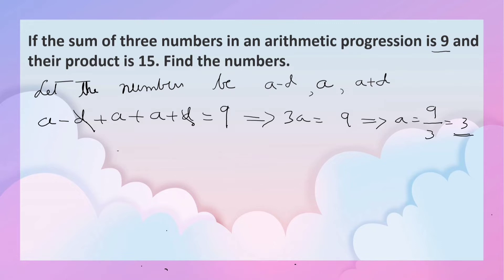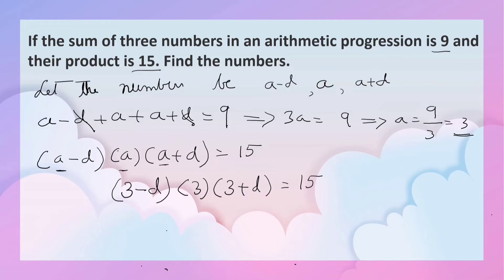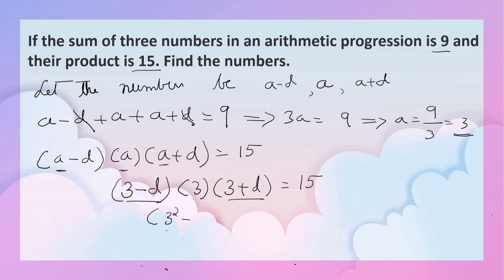Now we know that the product of the numbers is 15. So (A minus D) into A into (A plus D) is equal to 15. Here A is 3, so substituting: (3 minus D) into 3 into (3 plus D) is equal to 15. Transposing 3, we get (3 minus D) into (3 plus D) equals 15 by 3, that is 5.